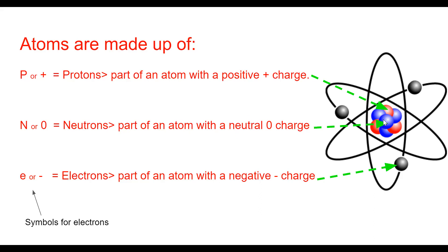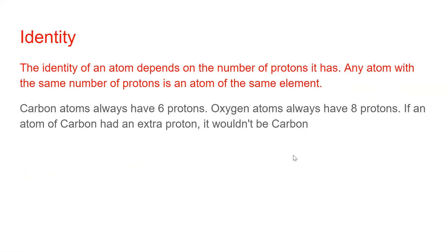Protons are the part of an atom that has a positive charge. Neutrons have no charge — neutral or zero charge. Electrons are the part of an atom with a negative or minus charge. The symbol for an electron is 'e' or a minus sign; for a neutron, 'n' or zero; for a proton, 'p' or a plus sign. We will use these symbols when drawing diagrams of atoms.